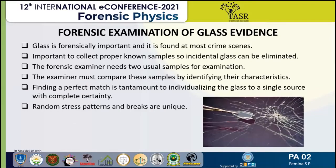In forensic examination of glass evidence, to pinpoint the source of the glass evidence, the forensic examiner needs two samples: glass fragments collected from the crime scene and glass fragments taken from some item belonging to the suspect. The examiner must then compare these samples by identifying their characteristics, such as color, fracture patterns, striations from manufacturing, unevenness of thickness, surface wear, surface film or dirt, and weathering patterns. The examiner tries to fit the pieces of the puzzle together by matching the irregular edges of the broken glass samples and finding corresponding irregularities between the two fragments. Finding a perfect match is tantamount to linking the glass to a single source with complete certainty.